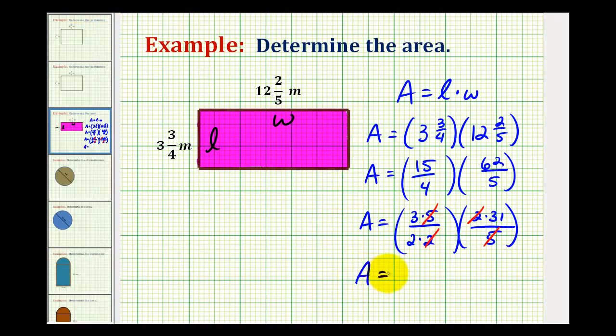So the area is going to be equal to three times thirty-one, that's going to be ninety-three, all over a denominator of two.